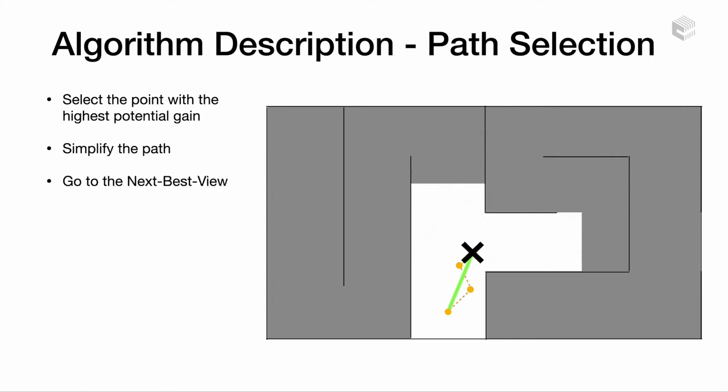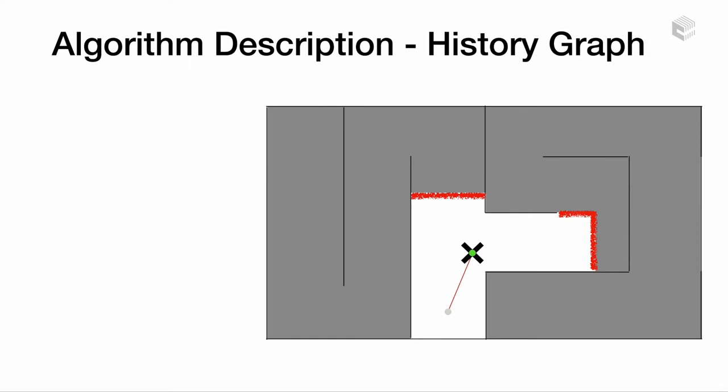The history graph is a new data structure that is maintained concurrently with the path planning algorithm. The basic overview of the graph is the following. It contains nodes sampled from visited positions along the drone's trajectories, so they are guaranteed to be collision-free.